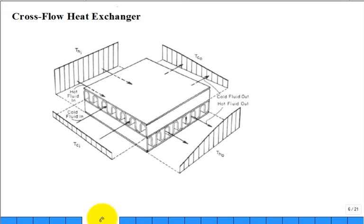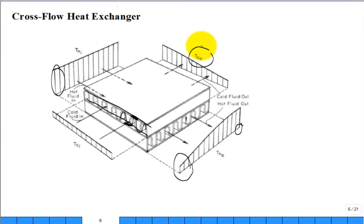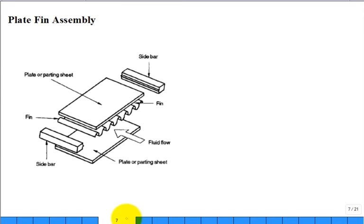Now let's introduce a different type of cross-flow heat exchanger — a plate-and-fin type. You can have a fin surface sandwiched between plates, which is useful especially for air-to-air heat transfer. One fluid goes through one set of passages, the other fluid crosses perpendicular. There will be non-uniform outlet temperature profiles.